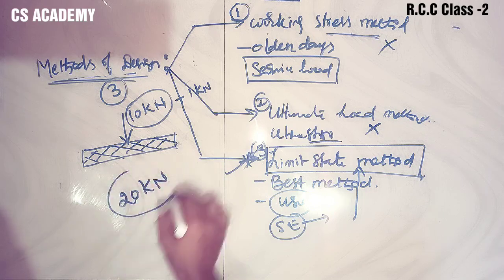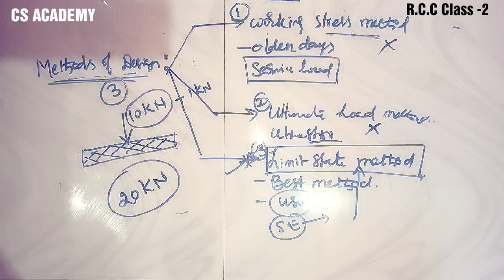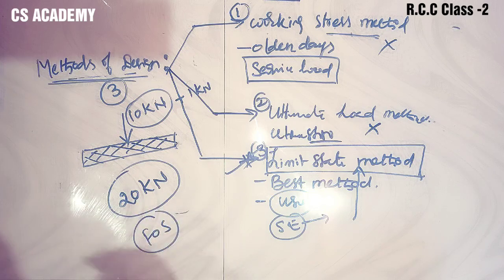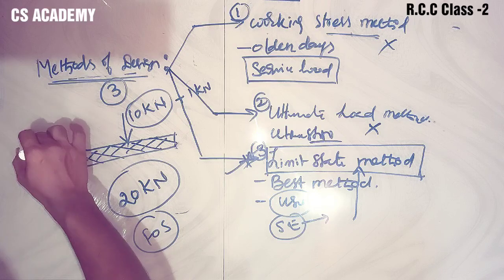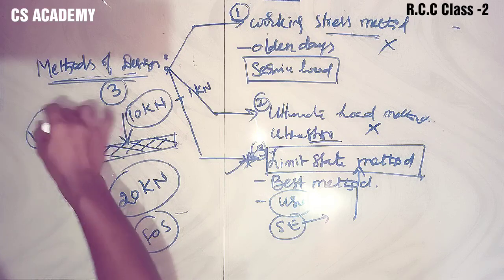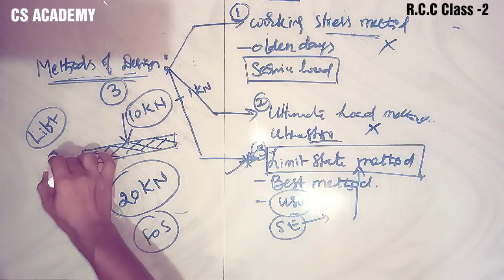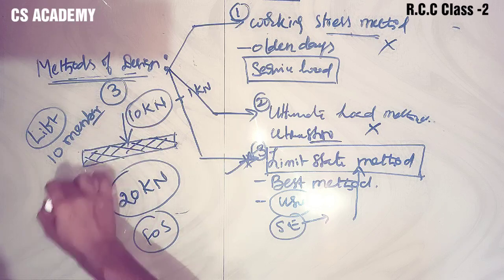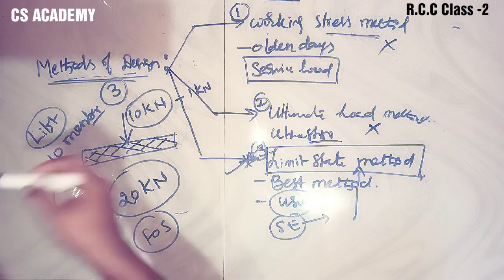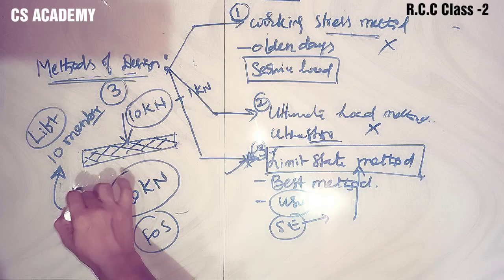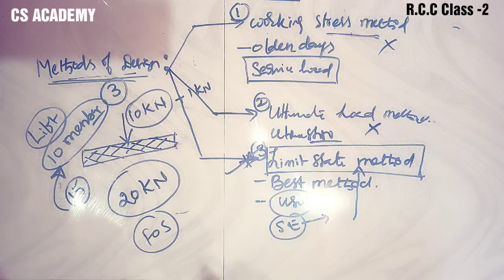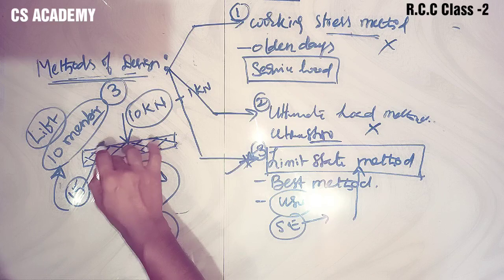For example, we design for 20 kN. We have the concept of a factor of safety. For example, a lift has a capacity of 10 members. If 15 members get in - because the lift has a limit of 10 members - 15 members will still be in, up to the limit. But because of this safety factor, we design the capacity for 20 members.